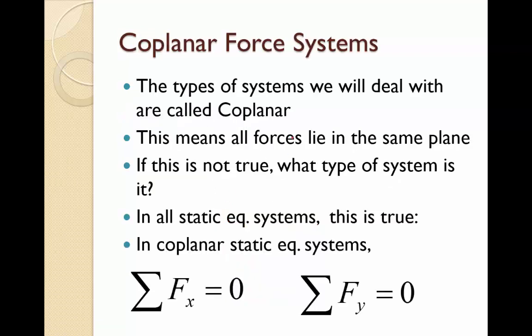The systems we're going to deal with right now are called coplanar. That means that all the forces share the same plane. If that is not true, then that type of system would be a three-dimensional system. We will discuss three-dimensional systems, but for now, we're just going to stick to 2D systems as you sort of learn these concepts. In all static equilibrium systems, the sum of the forces equals zero. However, in coplanar static equilibrium systems, we can also add the sum of the forces in the x direction equals zero and the sum of the forces in the y direction equals zero. So there's really two different equations we can have with that particular system.